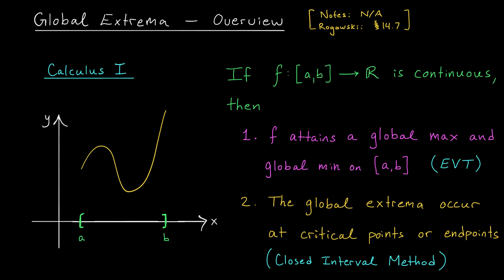So the EVT guarantees that these points exist but it doesn't tell you how to find them. That's the job of our second result which we sometimes refer to as the closed interval method.